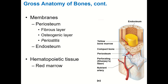Underneath the fibrous layer is the osteogenic layer — where new bone is generated. Bones grow in two ways: interstitial growth (at the growth plates, to be discussed Friday) and appositional growth, where new bone is laid down on the outside of the bone under the periosteum at the osteogenic layer. Osteoclasts simultaneously break down older bone on the inside to prevent the bone from getting too heavy. Periostitis is an inflammation of the periosteum.